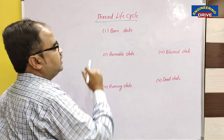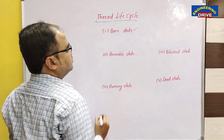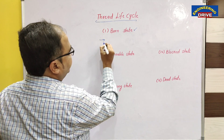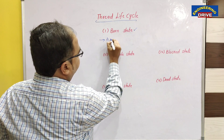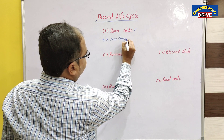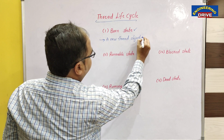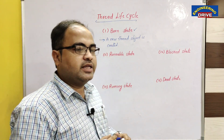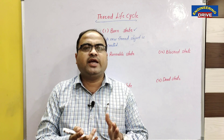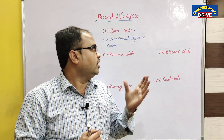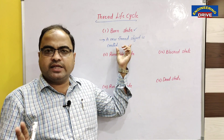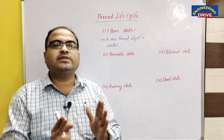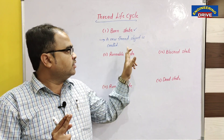What is the first state in the thread's life cycle? The first state is the born state. This is the first state of a thread. In this state, a thread is newly created with the help of a thread class — a new thread object is created. A thread enters into the born state when a new thread object is created from a thread class.